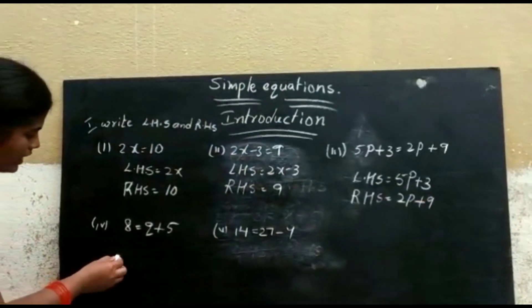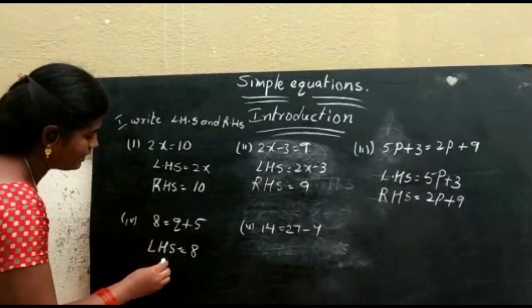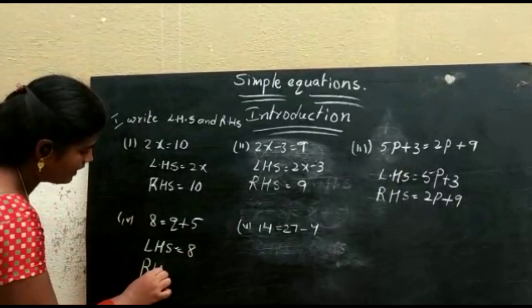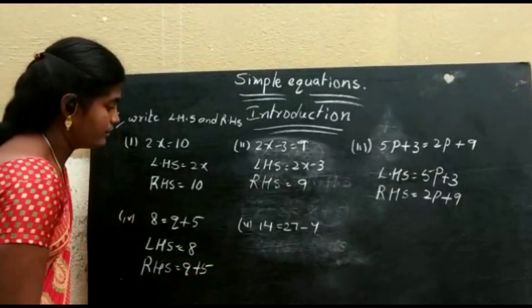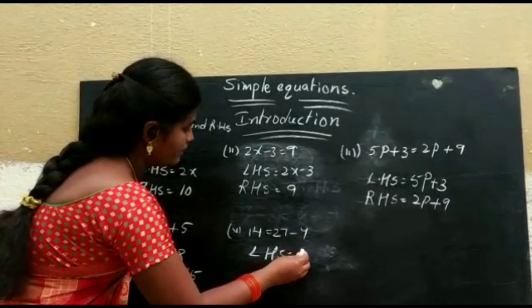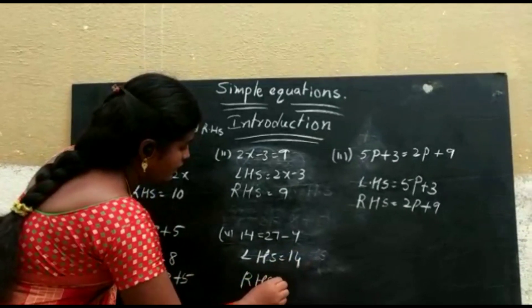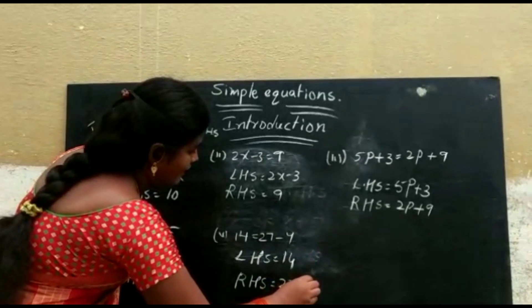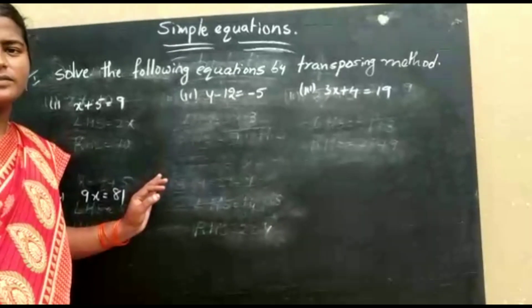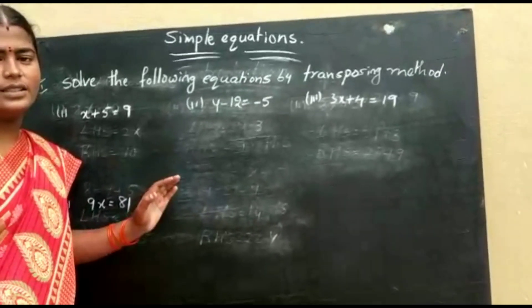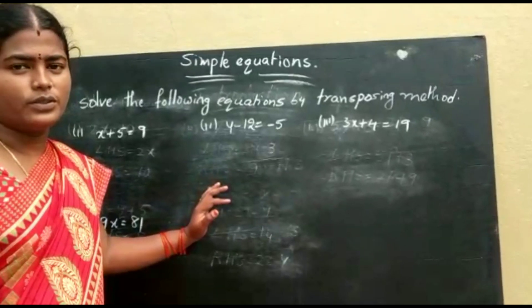Fourth one: RHS is equal to q plus 5. Next: LHS is equal to 14, and RHS is equal to 27 minus y.